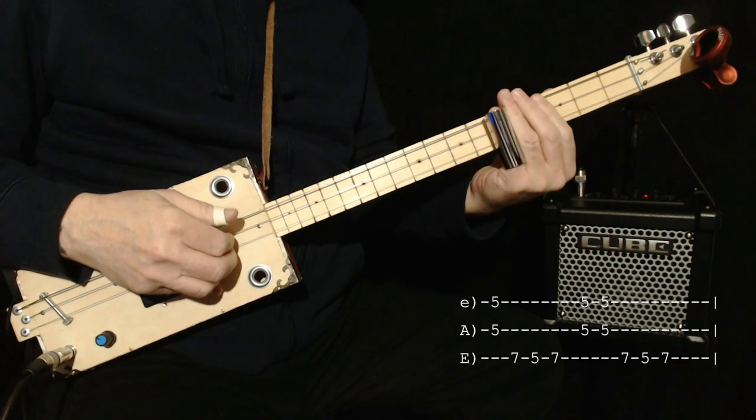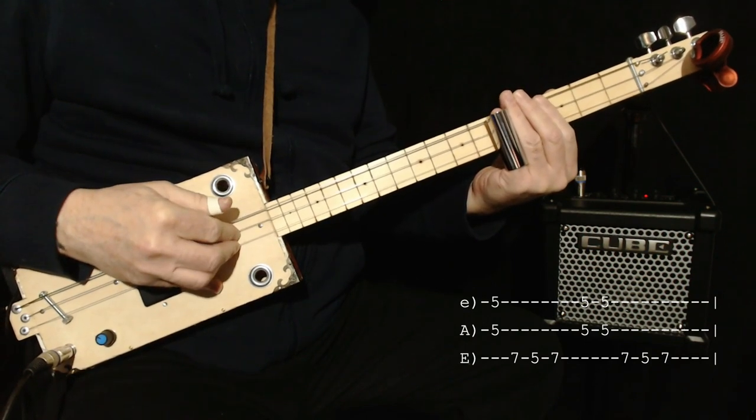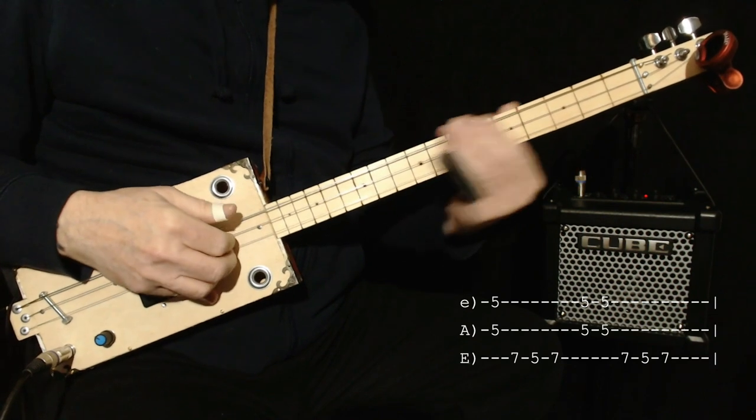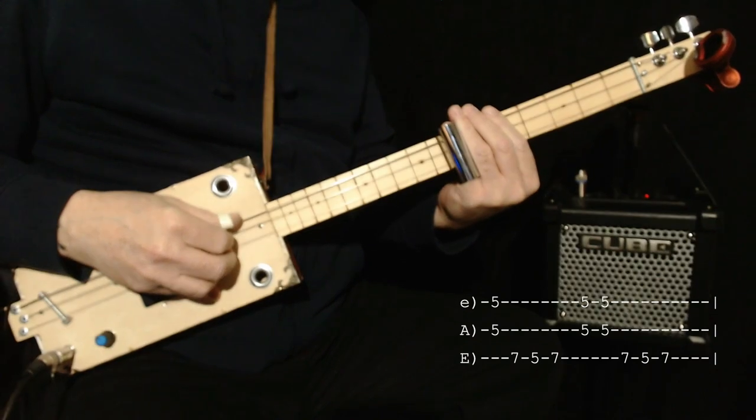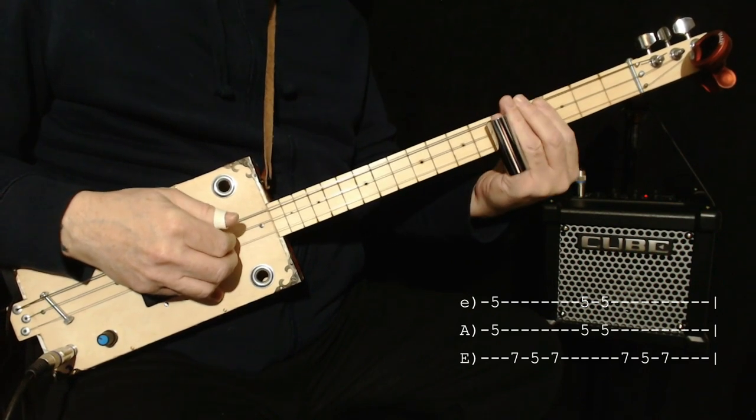That's what I do there. So I hit the chord on the 5th fret. These two fingers come back and mute it, so you don't get this sound. Right? And then I do the 7th fret, 5th fret, 7th fret, back to the chord.